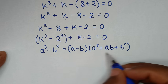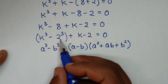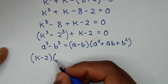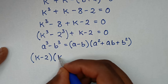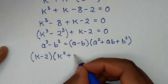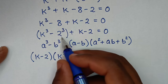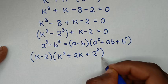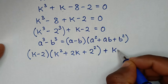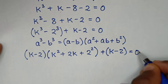Now applying this form, a minus b becomes k minus 2, and a squared plus ab plus b squared becomes k squared plus 2k plus 4. Then plus k minus 2 is equal to 0.